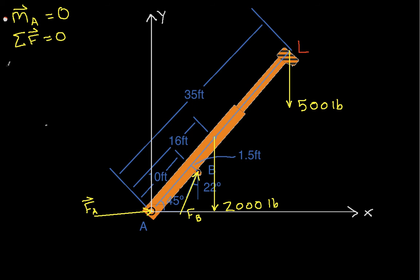And the position vector of point L, with this point being the origin, is going to be 35 feet times the cosine of 45 degrees times i-hat plus 35 feet times the sine of 45 degrees j-hat, which when we work out we get 24.7 feet i-hat plus 24.7 feet j-hat.